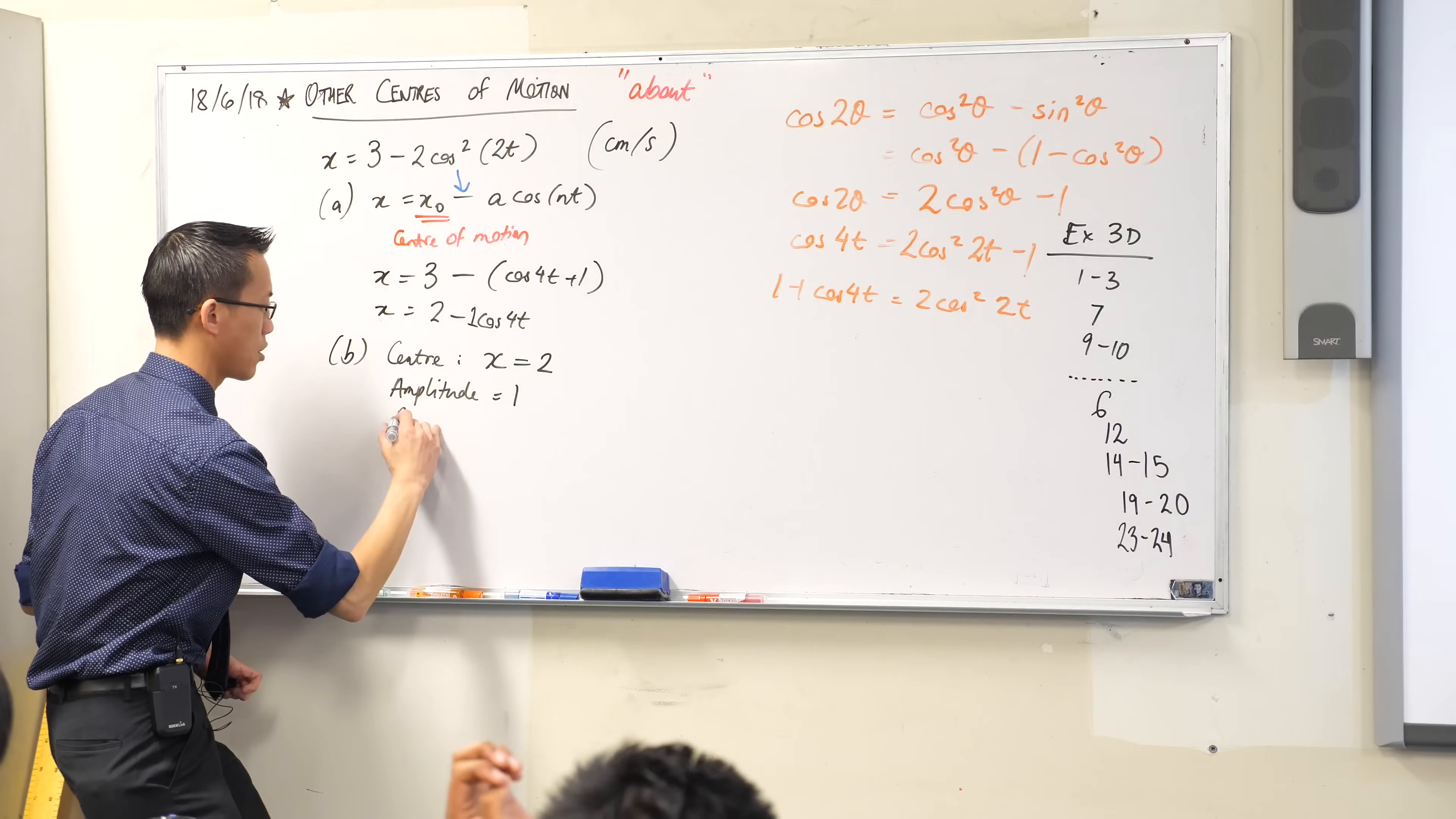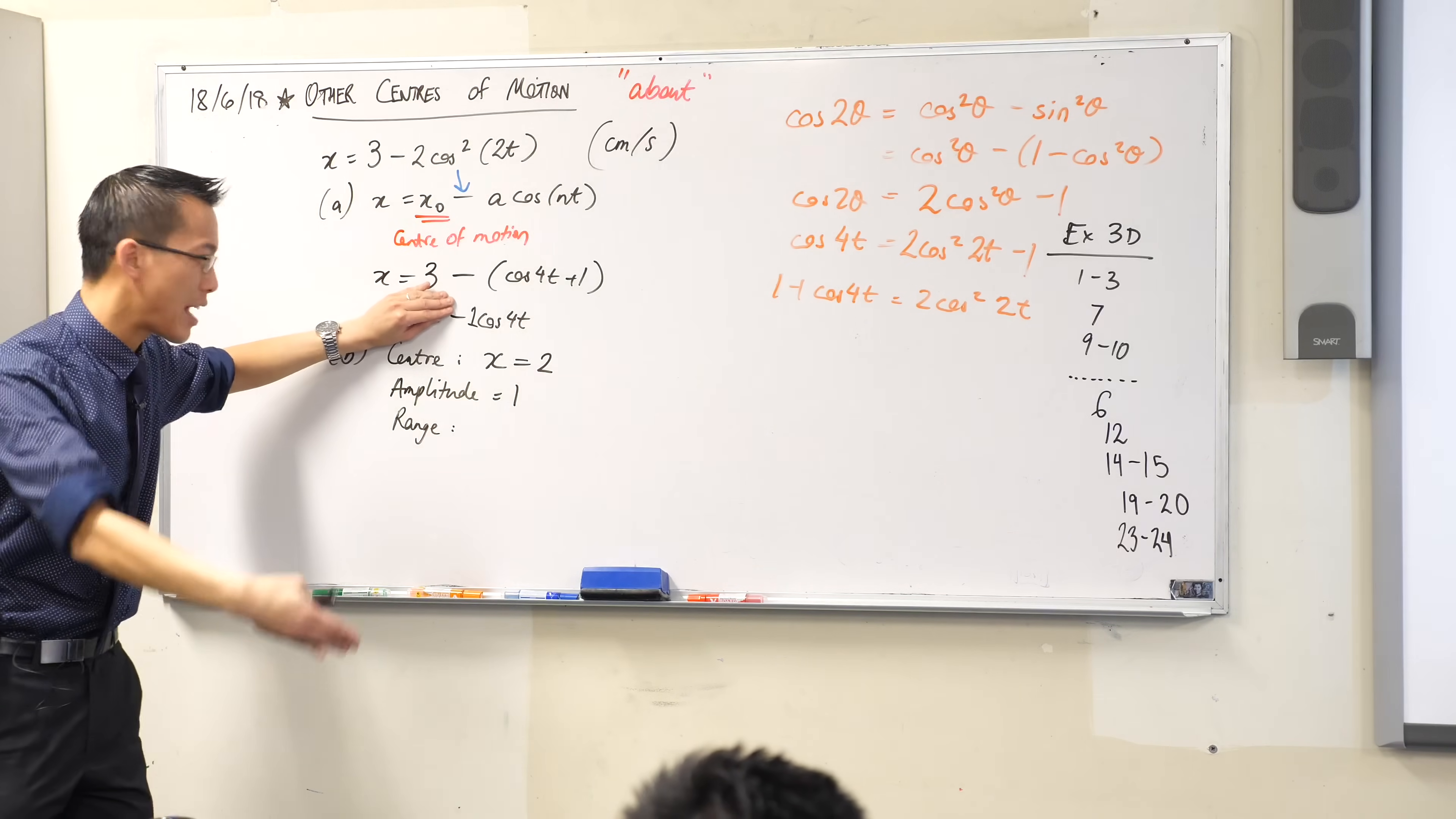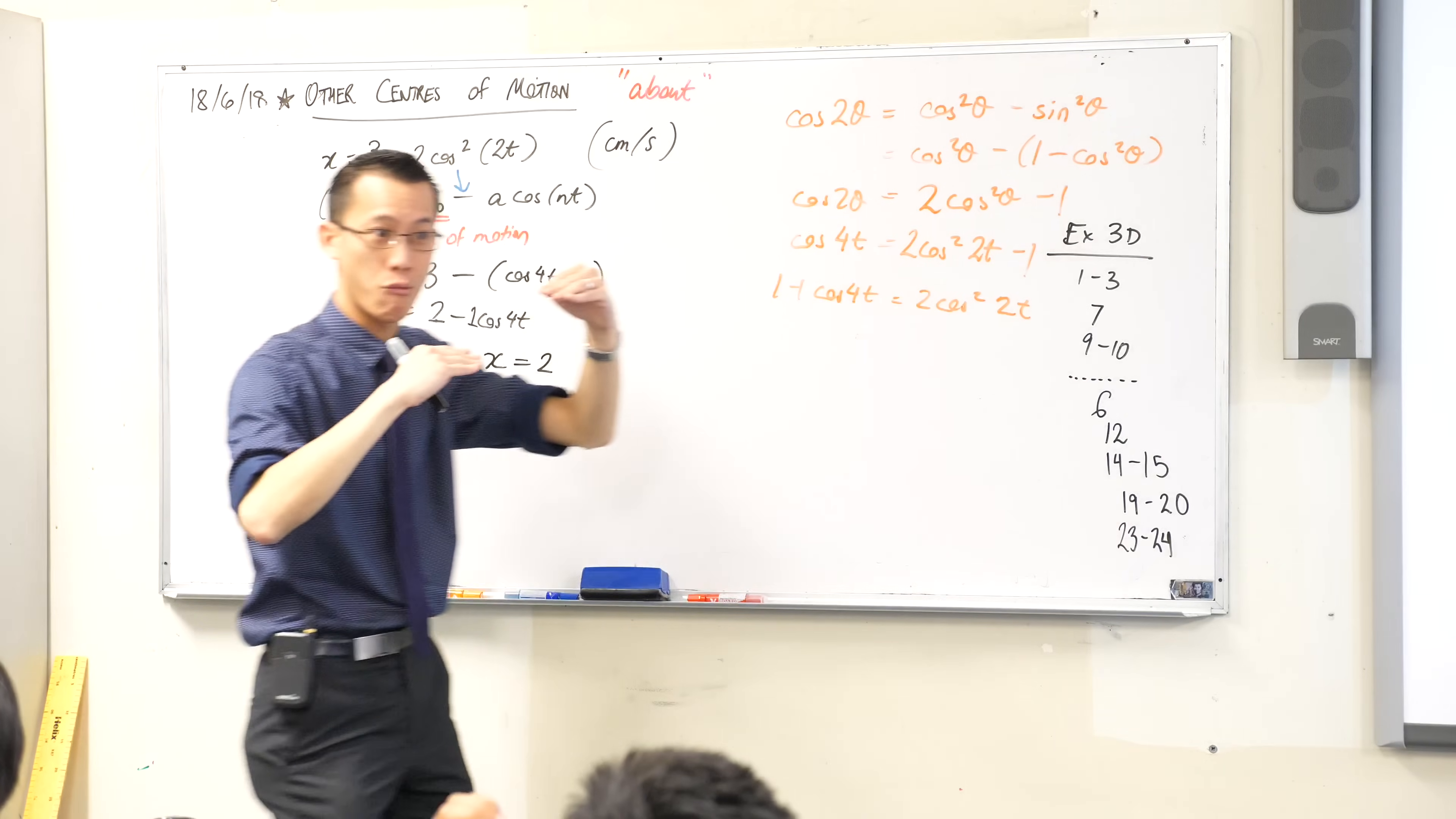They then ask us for the range. Okay, now this one you need to think a little bit. So we know that if I didn't have this 2 here, it would just be waving up and down around the origin, right? It would go up to 1 and it would go down to negative 1. But I don't have that. I've... Oh, sorry, I just messed that up. I've added 2, right? So what's that done? It's no longer between negative 1 and 1, is it? It's now up to... It's moved up by 2 units. It's gone from negative 1 to 1 and 1 to 3. So that is my range.